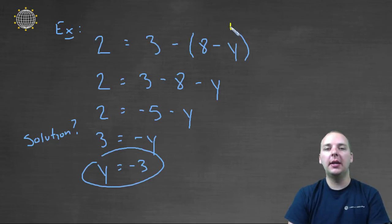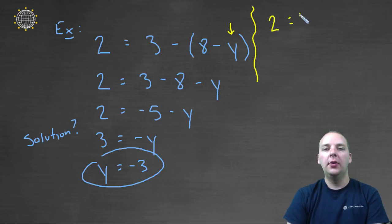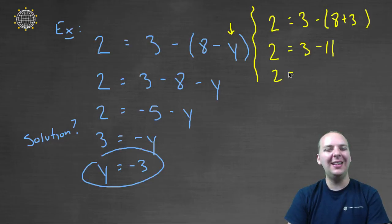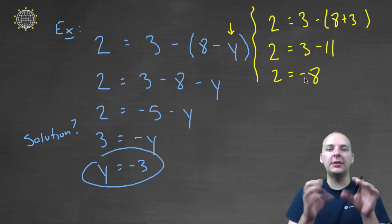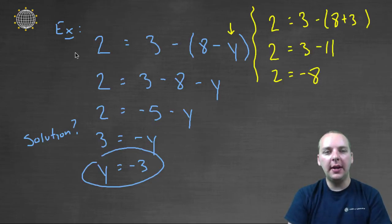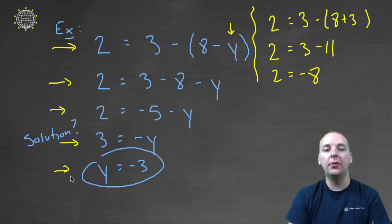Let me take this and stick it back in for y. We'll have 2 equals 3 minus the quantity (8 minus negative 3), which will make 8 plus 3, which is 11. So 2 equals 3 minus 11, and I get a weird answer: 2 equals negative 8. That doesn't sound right. This is a big flashing red light to go back and read carefully on a line by line basis, just to make sure you've done everything correctly.